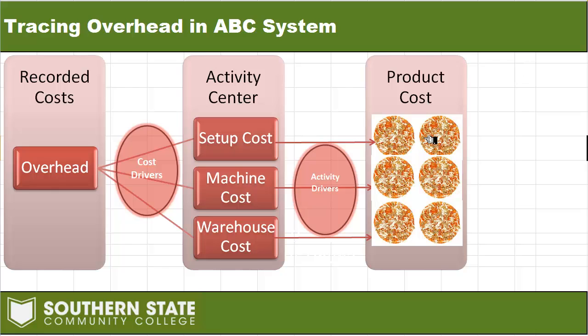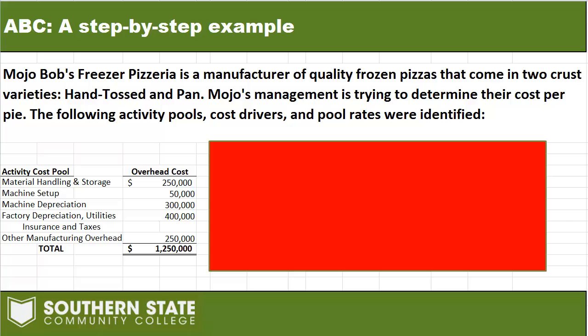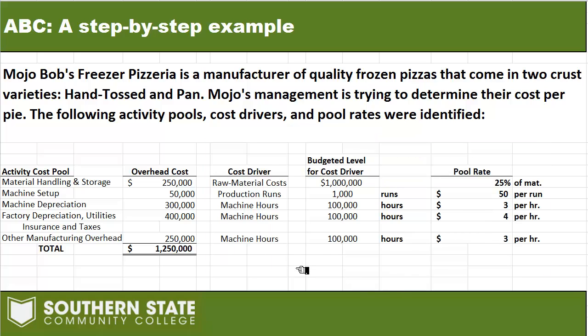Let's try to apply ABC. We have the same data as before — Mojo Bombs Freezer Pizzeria, still making two kinds of pies: hand-tossed and pan. They still have all the same overhead costs as before, but in normal costing we lumped all those together and divided them using one driver. Now we're going to keep them separated into different activity pools and assign those costs according to those pools to the two products we're making.